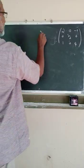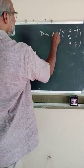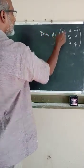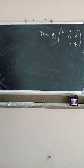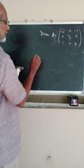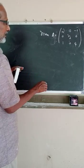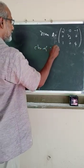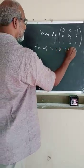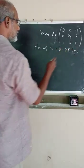Given the matrix A is equal to 2, 0, minus 1, 0, 1/2, 0, 1, 0, 4. In this problem we can find the eigenvalues and eigenvectors of the matrix. First of all, we can find the characteristic equation. The characteristic equation is determinant of (A minus lambda I) equal to 0.